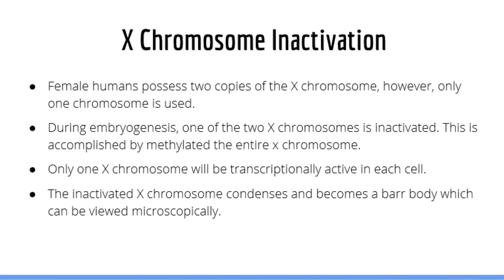Now let's discuss X chromosome inactivation. Humans have 23 different chromosomes and two copies of each for a total of 46. Both copies of each chromosome are expressed simultaneously, except X chromosomes. Unlike chromosomes 1 through 22, we only need one functional copy of chromosome X. We all need two copies of chromosomes 1, 2, and 3 working at the same time — but we do not need two copies of chromosome X, only one copy being transcribed and expressed.